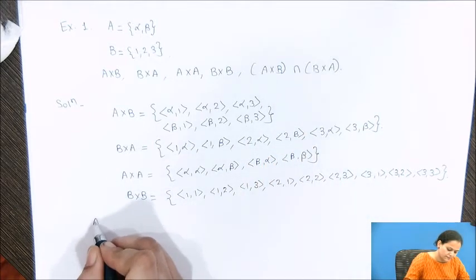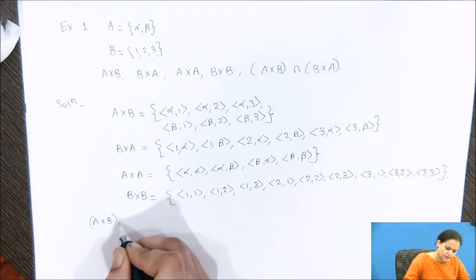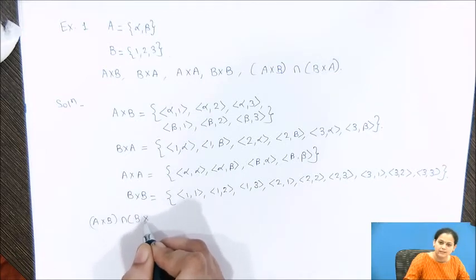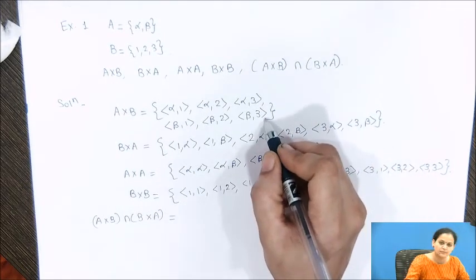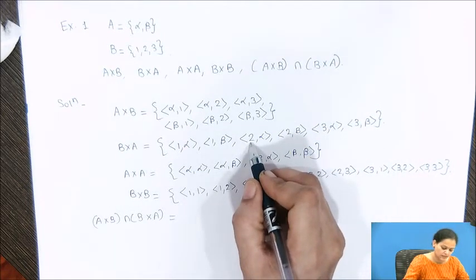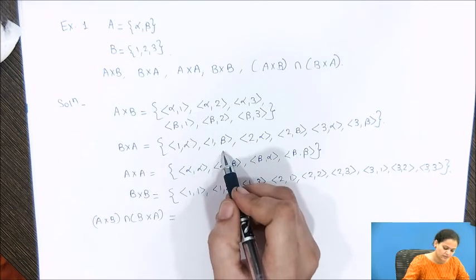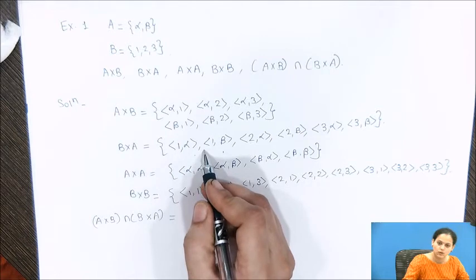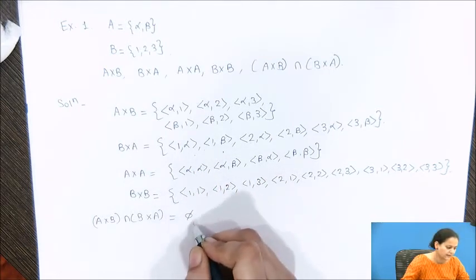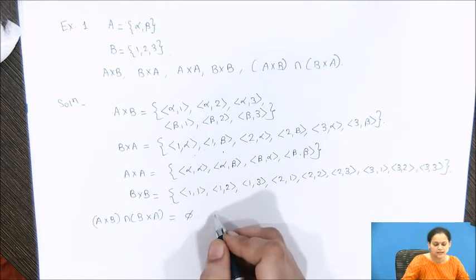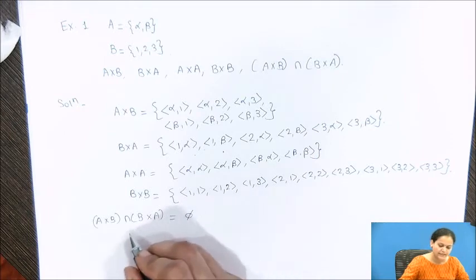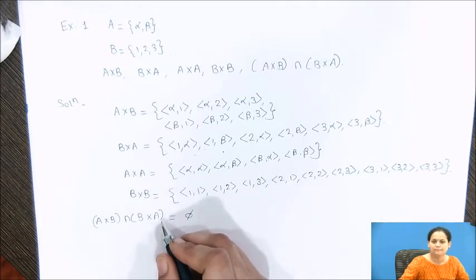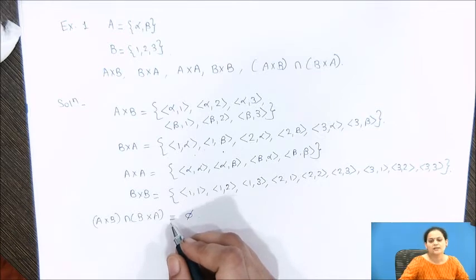Finally, we have been asked for A×B ∩ B×A. We have already found A×B and B×A. If you try to take the intersection, there are no common elements, so it results in φ, the empty set. This allows us to derive an important property of the Cartesian product: A×B is never equal to B×A — that is, the Cartesian product is never commutative in nature.